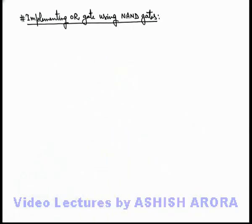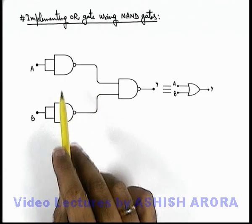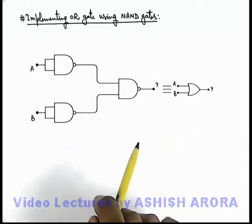Here we are going to see how using the combination of NAND gates we can implement OR gate. Here you can see this is the combination circuit of three NAND gates using which we can implement an OR gate.